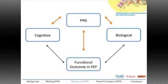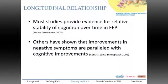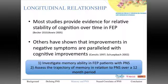Our next objective examined the relationship between cognition and persistent negative symptoms. The literature shows that patients with elevated negative symptoms tend to have poor neurocognitive performance. More specifically, certain SANS items have correlated with cognitive deficits — avolition with verbal memory impairments, and alogia with poor working memory or verbal fluency. We wanted to investigate memory ability in first episode patients with PNS and assess this trajectory over a 12-month period, studying three memory domains: visual, verbal, and working memory.